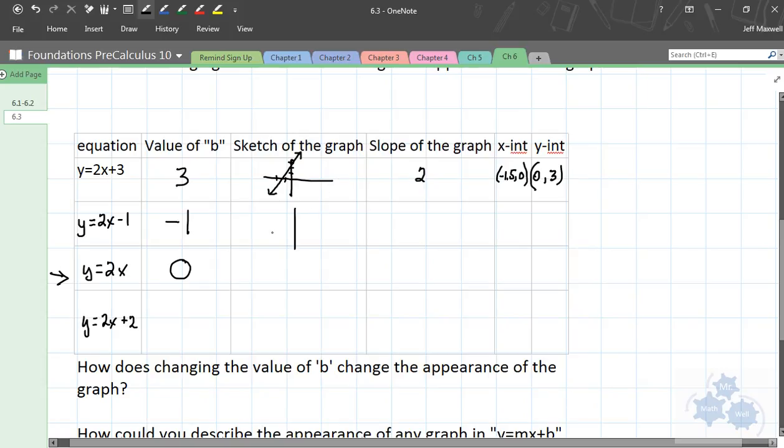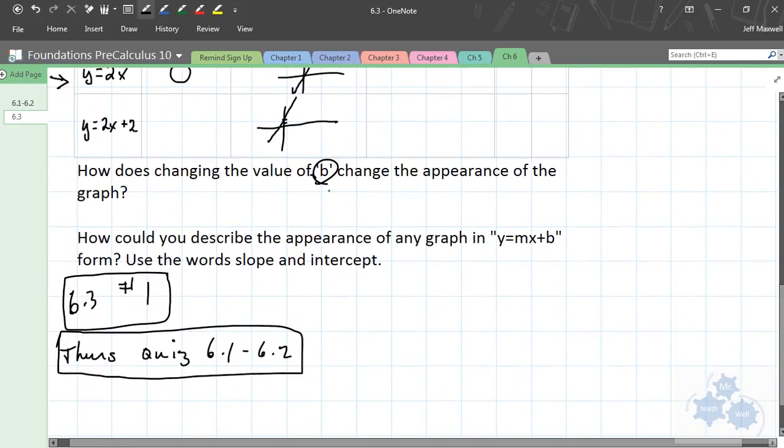So, what we find when you fill out this chart is that changing the B value changes the Y-intercept. So, quickly, the graph of this one would have the exact same slope as this above one, but it would intercept the graph at negative 1. This one would intercept the graph at 0. And this one here, same slope as all the other ones, but would intercept the graph at positive 2. Right there. So, when we summarize this, changing the value of B, it changes where the graph intercepts the Y-axis. B is the intercept. How could you describe the appearance of any graph in this form? Well, it's a straight line. We know that because it's a linear function. It has the slope equal to M. And it has a Y-intercept equal to B.